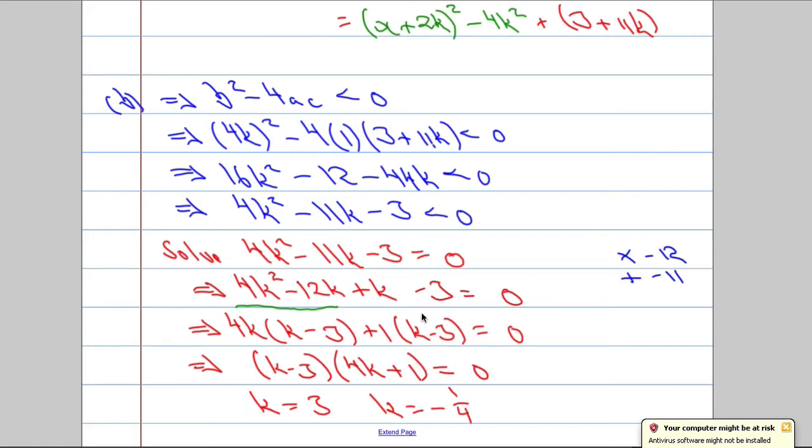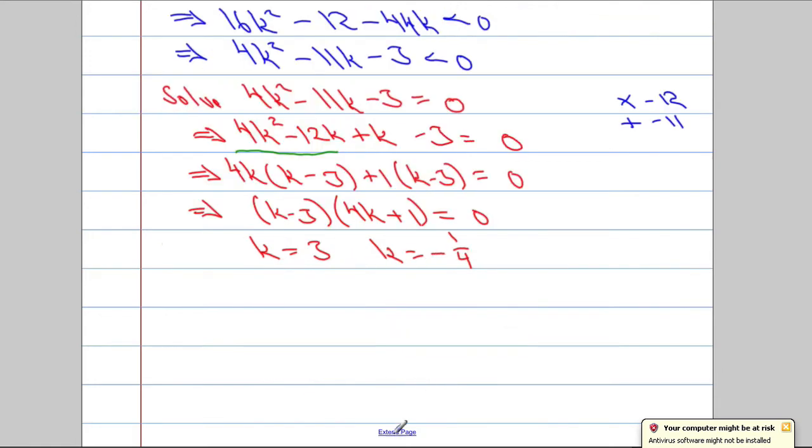And I can factor out k minus 3 now from the whole thing, which leaves us with 4k plus 1. It's got to be equal to 0. So potential values of k, or the critical values, k could be equal to 3, or k could be equal to minus 1 over 4. But that's not the potential solutions. They are just the critical values. Now we've got to sketch the curve.